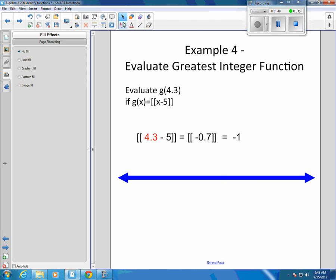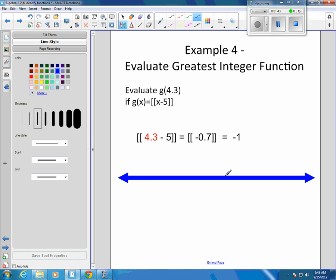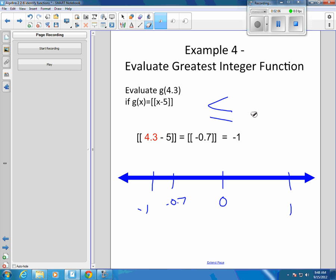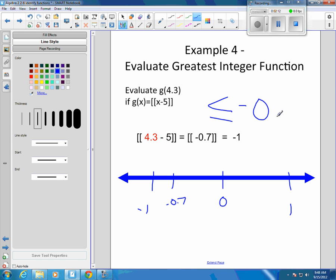So we've got 0, we've got negative 1, and we've got 1, and negative 0.7, negative 0.7 here. And we want the greatest integer less than or equal to what our x value is, or less than or equal to negative 0.7. So less than negative 0.7 would be that direction, and so we are at negative 0.7.